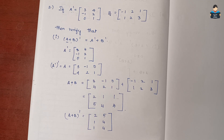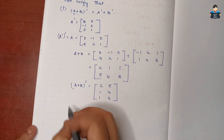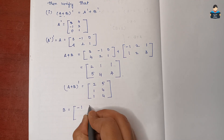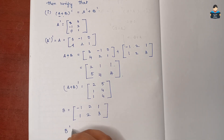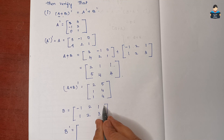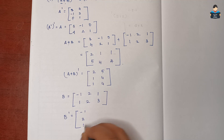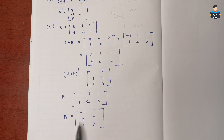Next we do the right-hand side. We need A transpose plus B transpose. So first find B transpose. B equals [-1, 2, 1 / 1, 2, 3]. B transpose — row wise becomes column wise — equals [-1, 1 / 2, 2 / 1, 3].